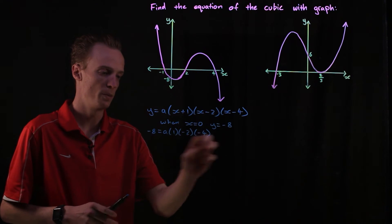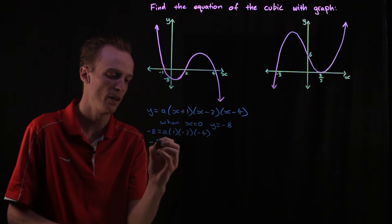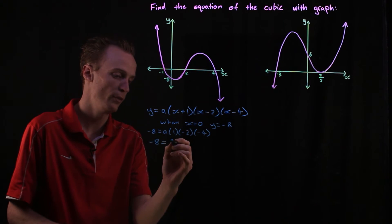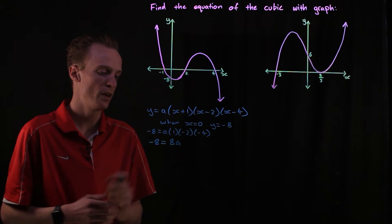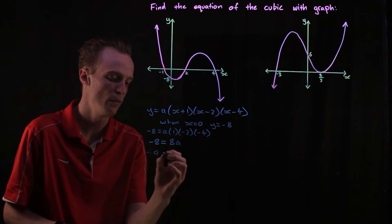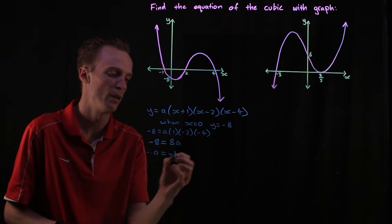From here I want to just multiply this part out. So negative eight will be equal to negative times negative will be positive, so that will be eight a. And now dividing both sides by our eight here, we'll find that our a value is going to be equal to negative one.